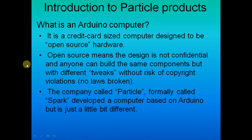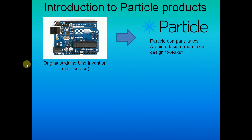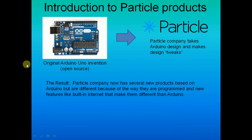This company called Particle, they used to be called Spark, developed a computer based on the Arduino but it's a little bit different. They added their own tweaks, but it's still more or less an Arduino because you use the same programming language Arduino uses. They have several new products now — they're all Arduino based and programmed the same kind of way, but they have built-in internet, which makes them different than Arduino. With Arduino you have to add something called a shield that sits on top and costs extra. That's not the case with these — they're all built in with internet one way or the other.